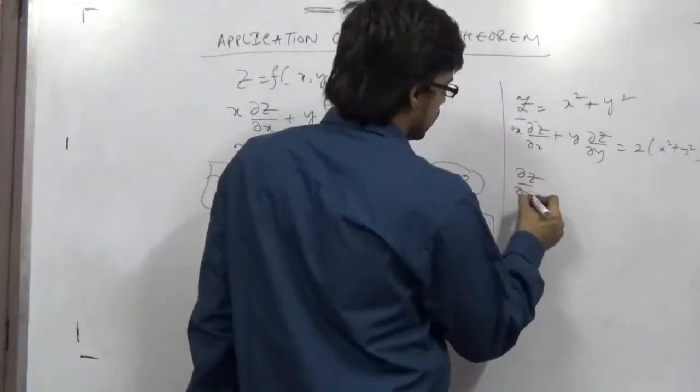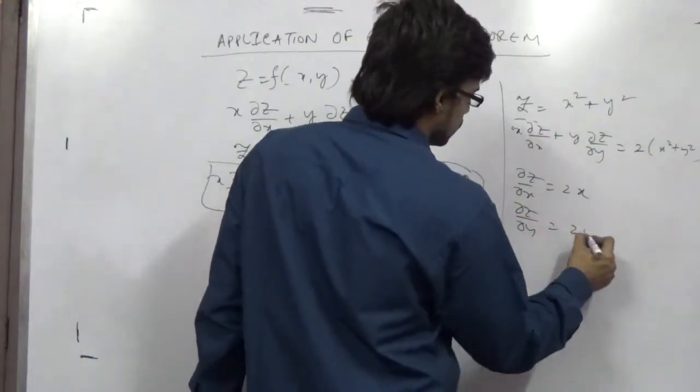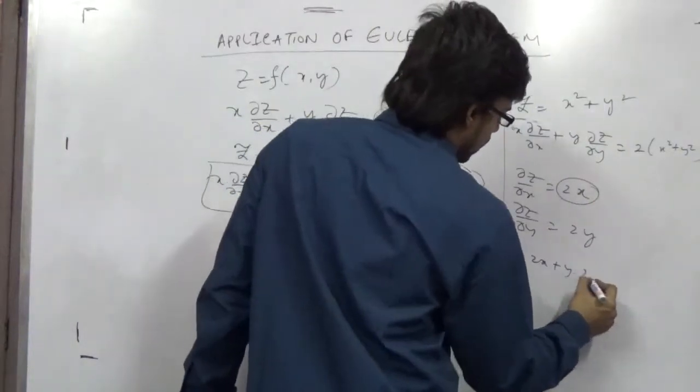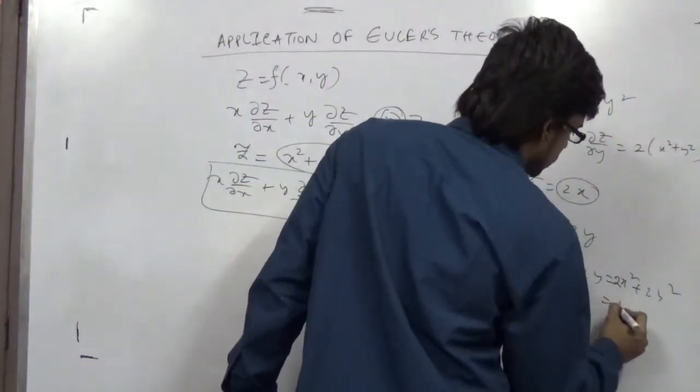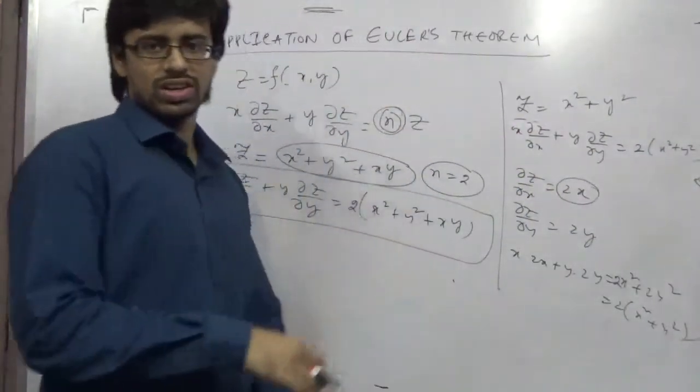For example, del z del x will be simply 2x. Del z del y will be 2y. So if you put it x times 2x plus y times 2y, then it is 2x squared plus 2y squared, which equals 2 times the original function. You can obviously do this.